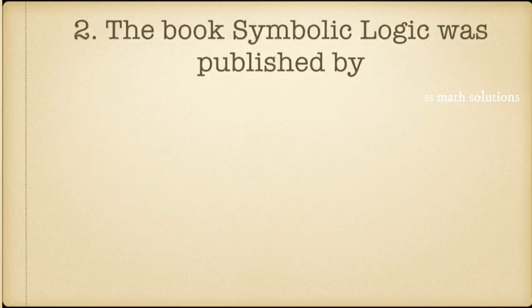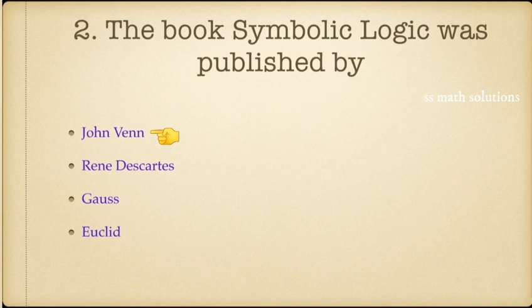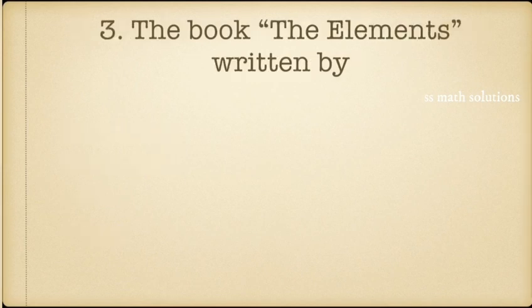Next question: the book Symbolic Logic was published by whom? Options include John Venn, Renee Descartes, Euclid. The answer is option A — John Venn. The book Symbolic Logic was published by John Venn.